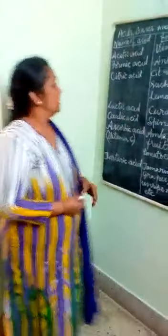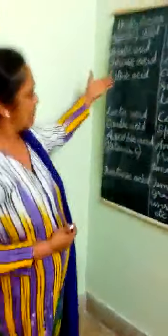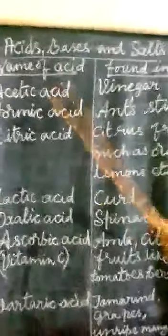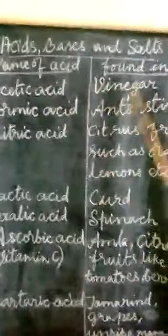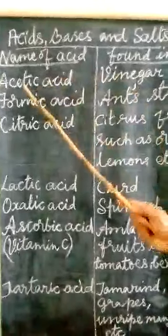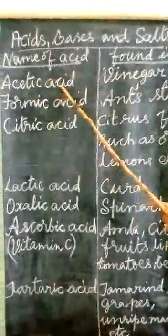Some acids are present in a few substances that we use in daily life. Now we will learn all of this. In vinegar, acetic acid is present.